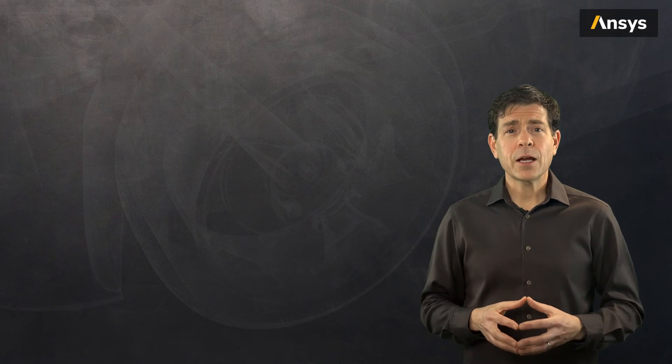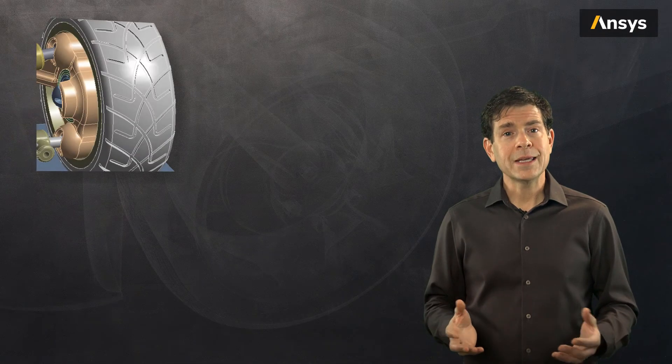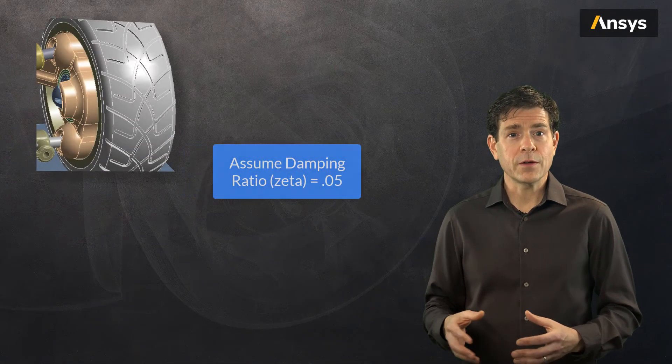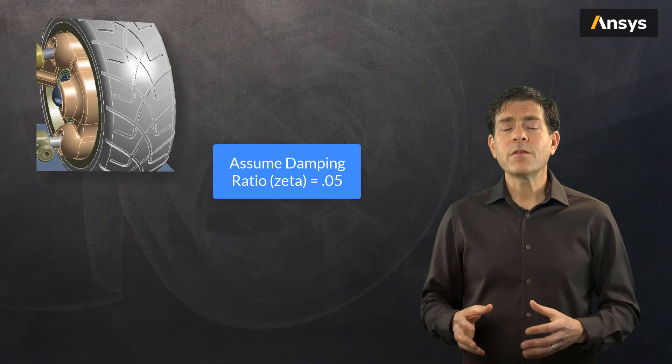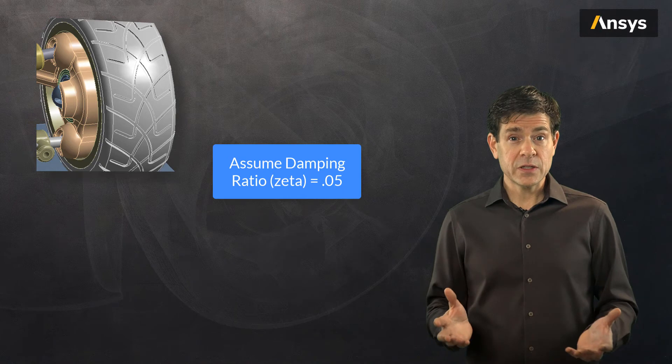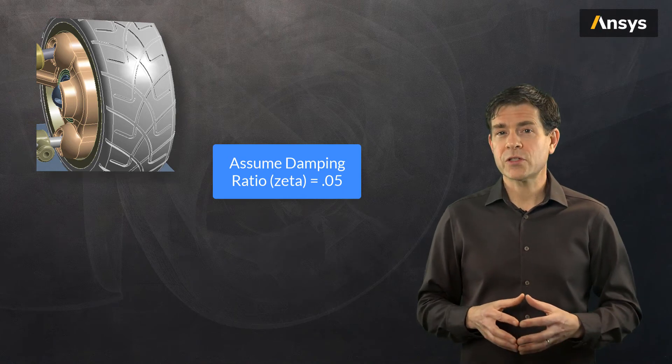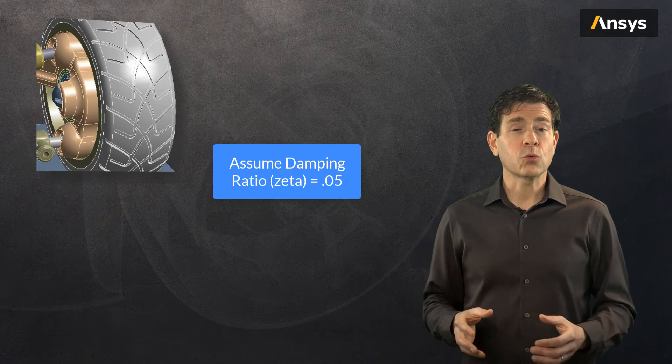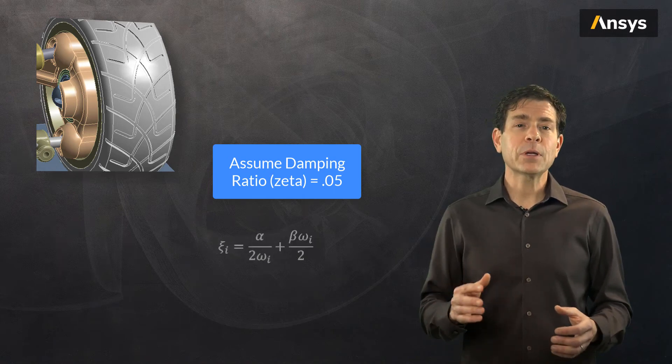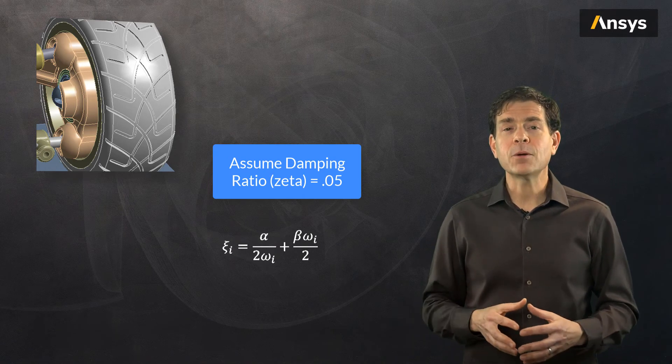Now for the damping of the tire material, we make the assumption that the damping ratio is 0.05 or 5%. Recall that damping of rubbers is often temperature and frequency dependent, but for this example, we assume it is just constant. We also recall the equation that we discussed during the Rayleigh damping relating the damping ratio to the alpha and beta multipliers.